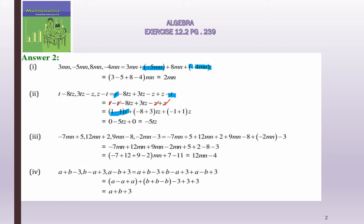Now take mn as common and gather the constants. For mn terms: -7 + 12 = 5, 5 + 9 = 14, 14 - 2 = 12mn. For constants: 5 + 2 = 7 and -8 - 3 = -11, so +7 - 11: since 11 is bigger and its sign is minus, the result is -4. Answer: 12mn - 4.